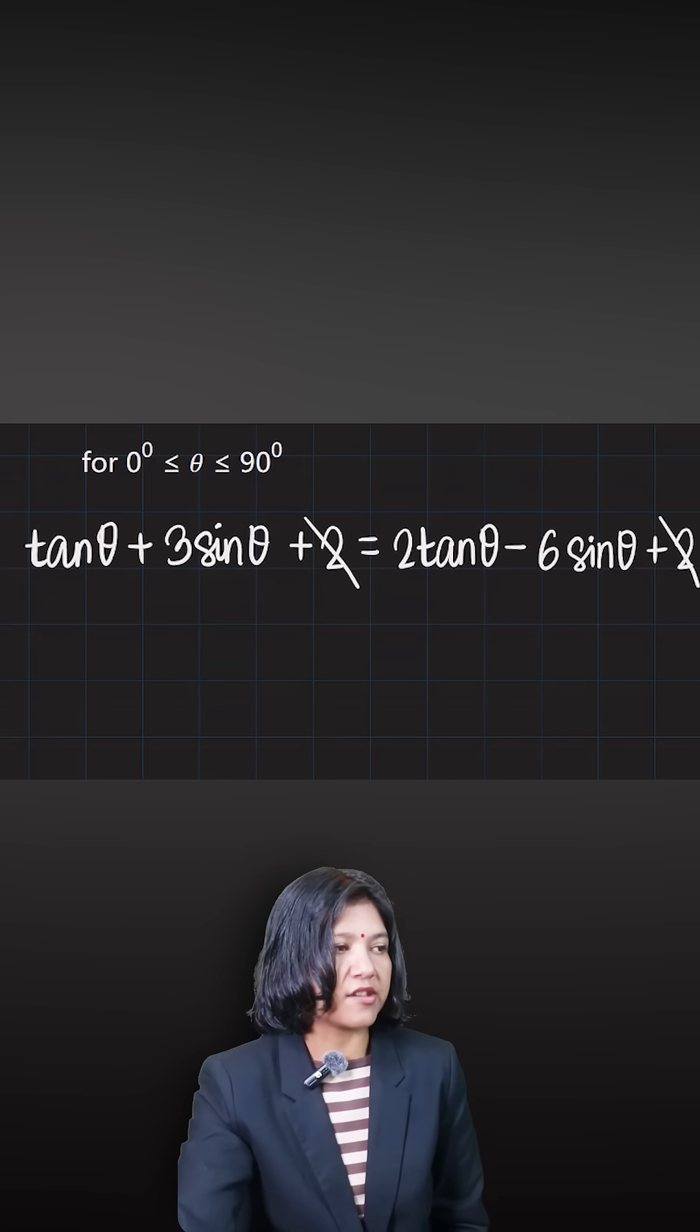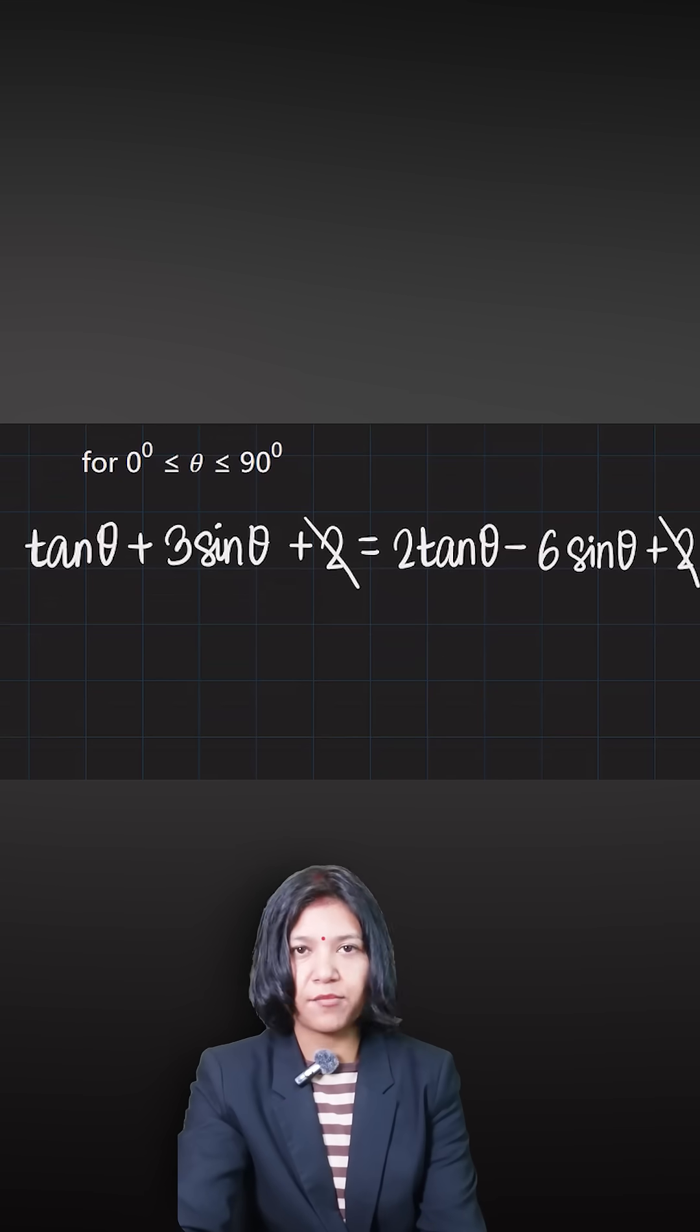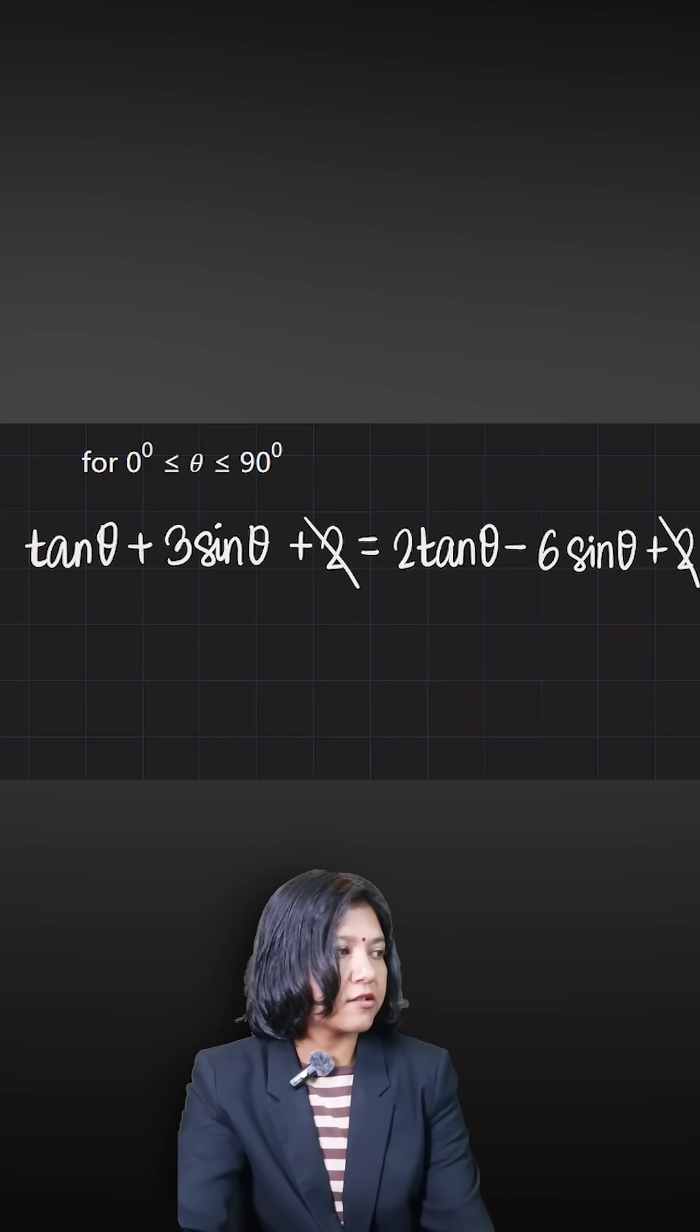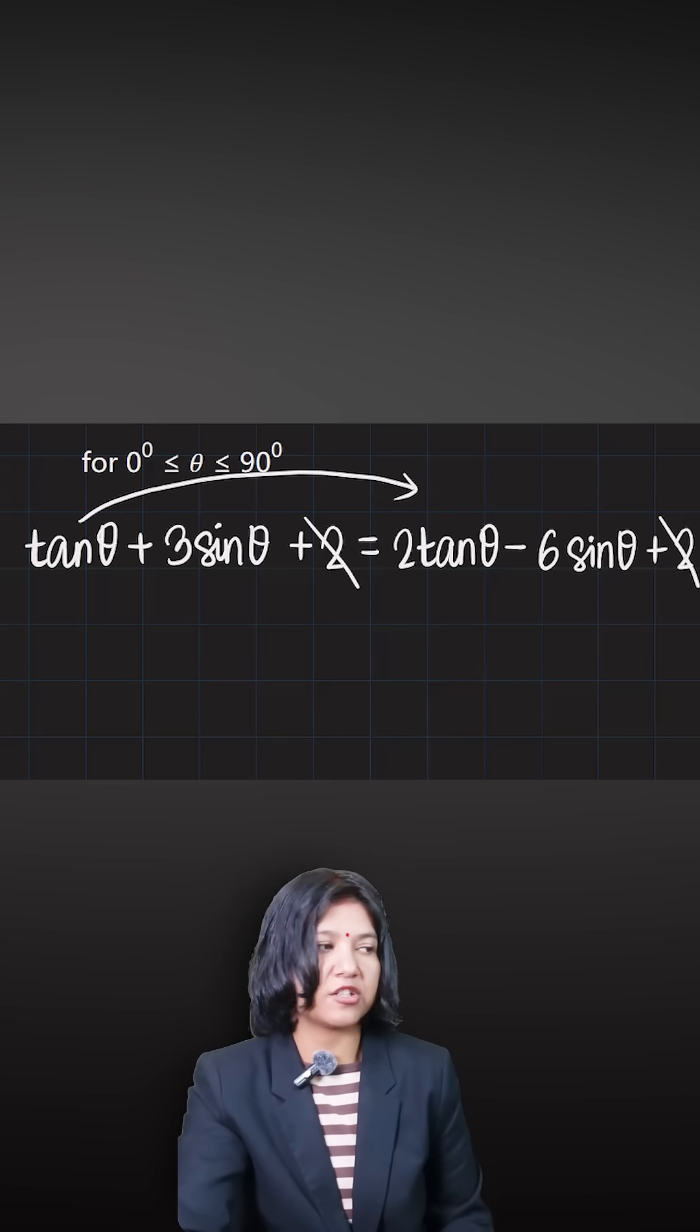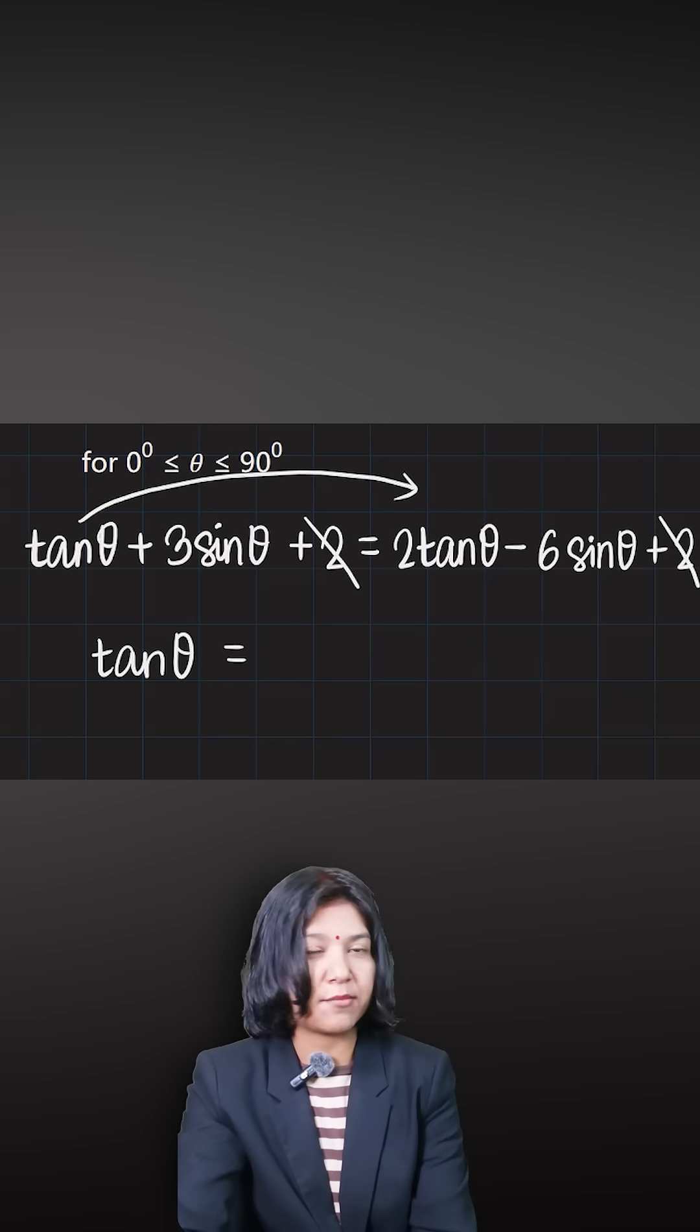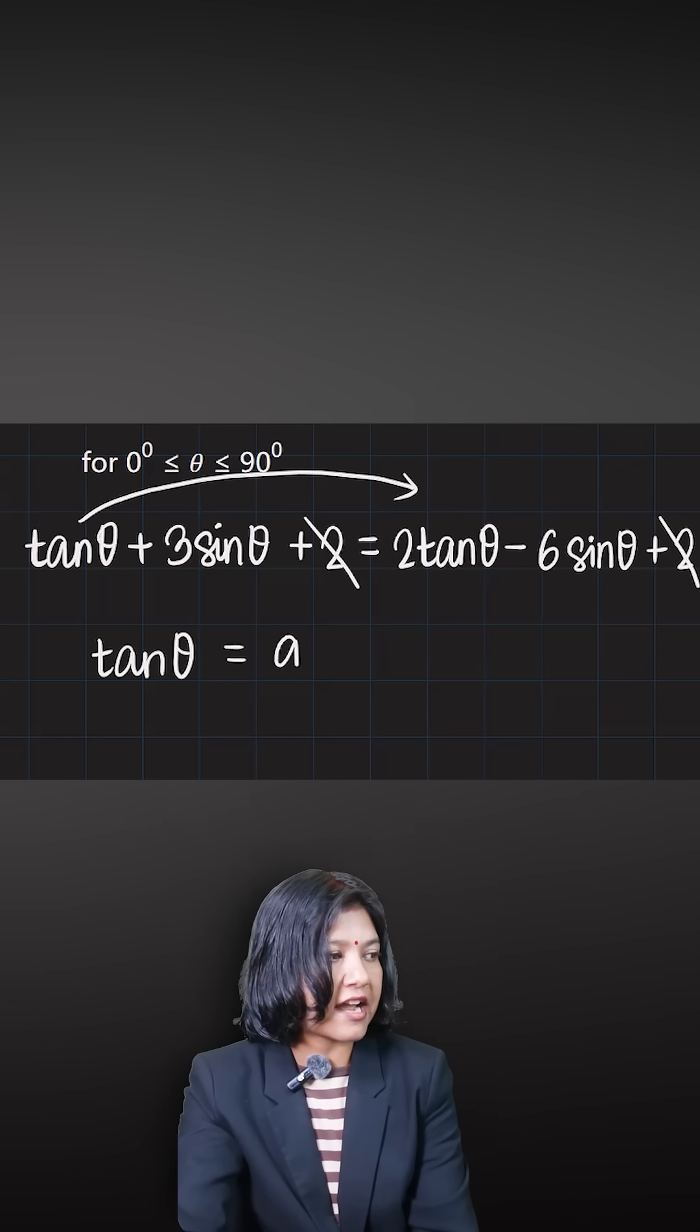Now you have tan theta on both sides and sin theta on both sides. You can bring tan theta together - I'm sending the smaller coefficient to the other side to get one tan theta. Similarly, when I bring the -6 to this side, I get 9 sin theta.